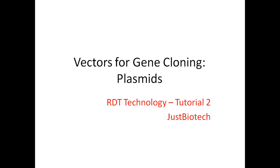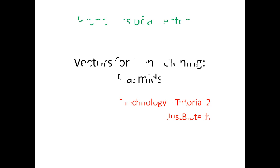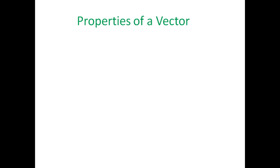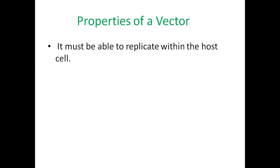We'll be discussing the very first vectors, which are plasmids. Before discussing plasmids, let us look at the basic properties a DNA molecule should possess to act as a vector. The first is it must be able to replicate within the host cell. When we generate the recombinant DNA molecule — the vector plus our gene of interest — and transfer it into the host cell, our main aim is to amplify our gene of interest for cloning purposes or for the production of medicinal products. The vector itself should be able to replicate, and along with the vector, our gene of interest will also be replicated.